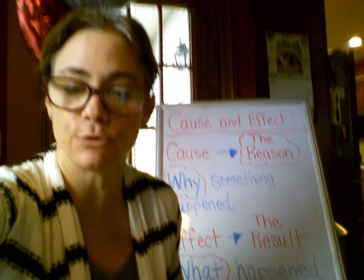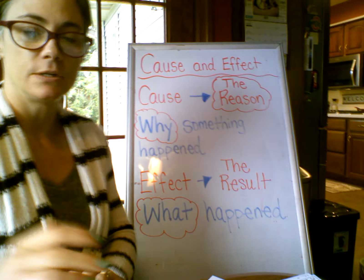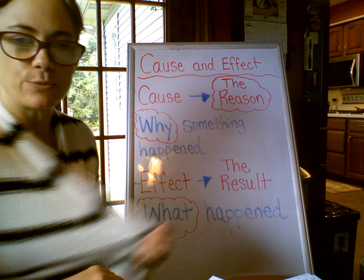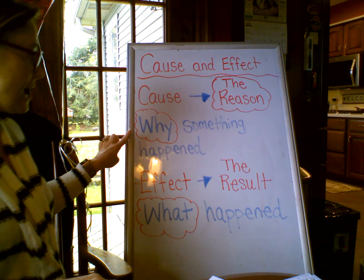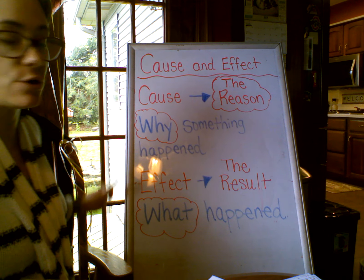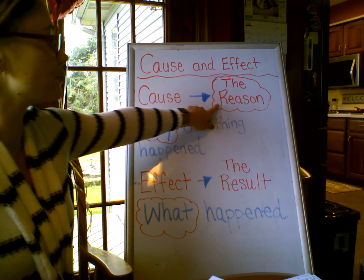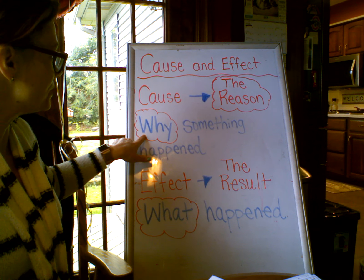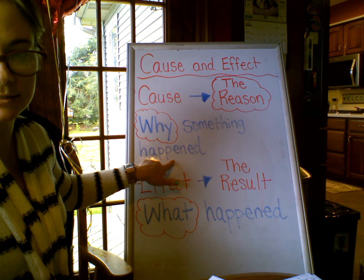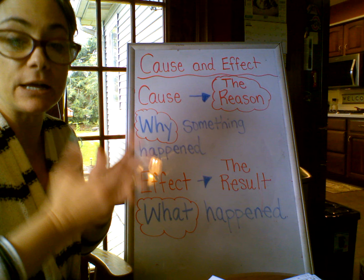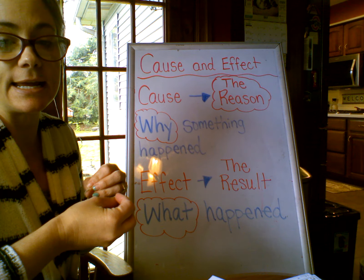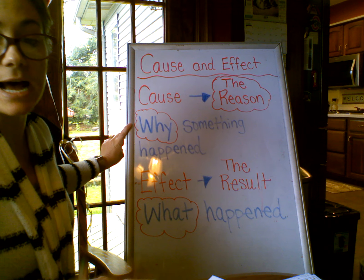But first I want to review cause and effect. So boys and girls, when you're reading a story there's a why something happens and then what happens because of it. A cause is the reason — why something happened. I use the example of my ice cream melted. Why? It was a hot day.